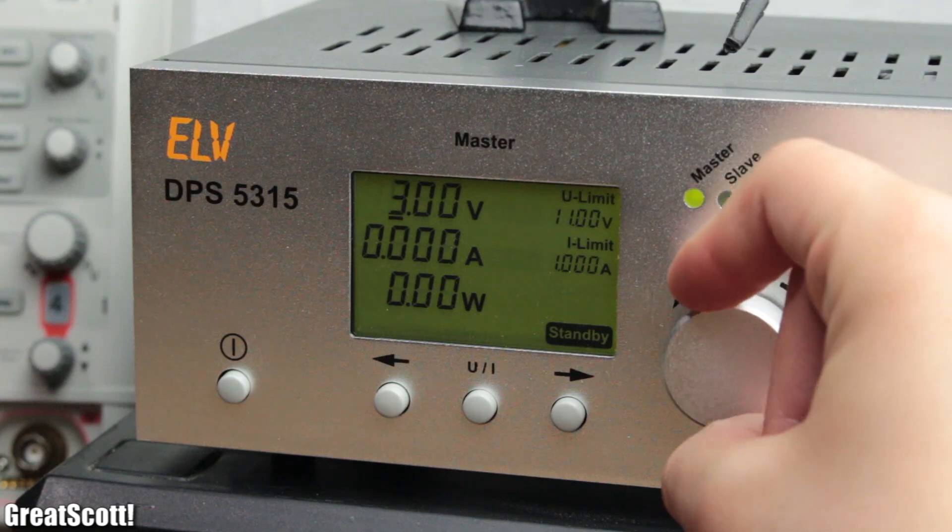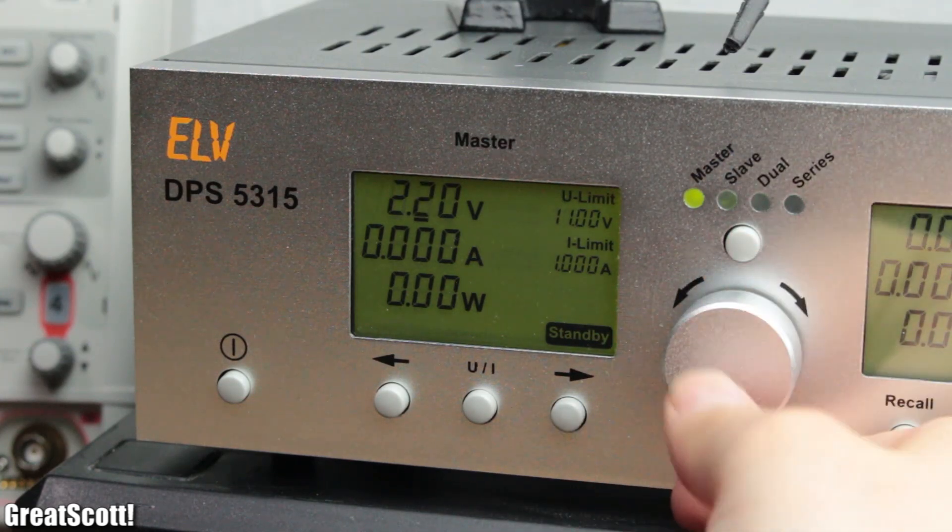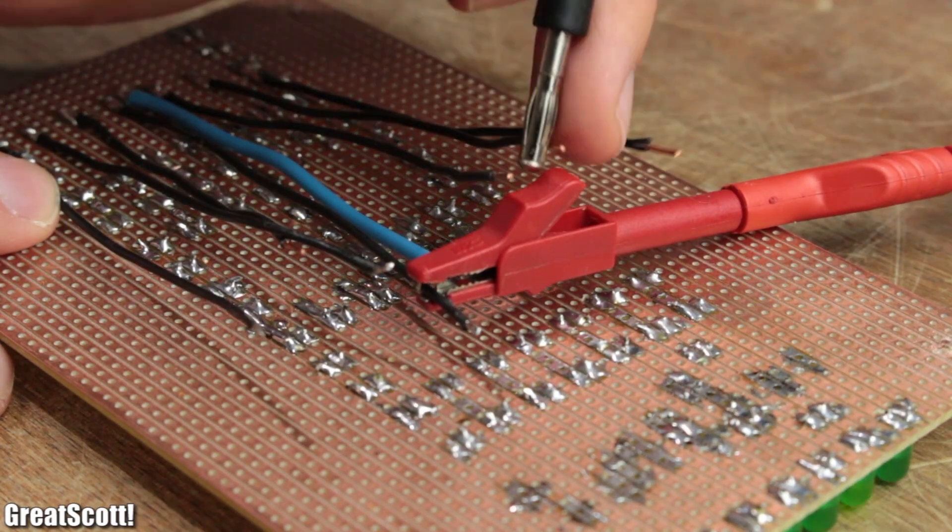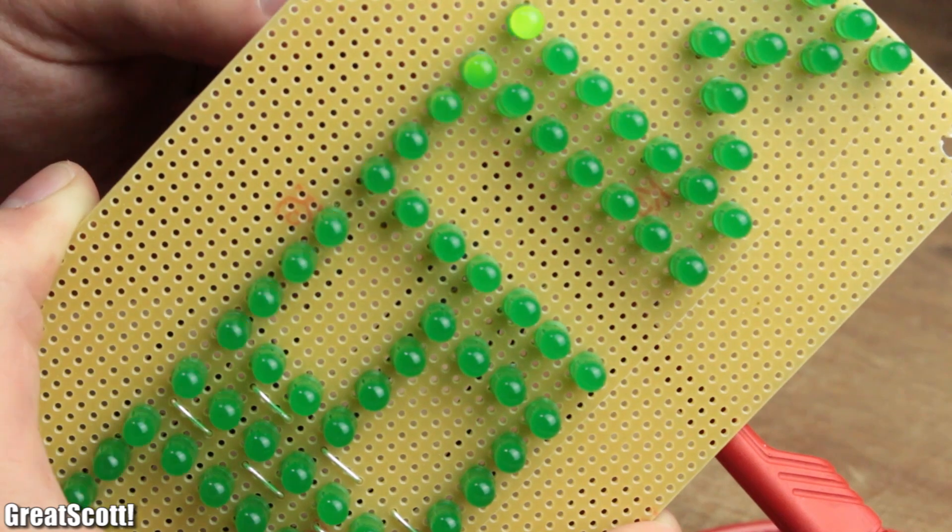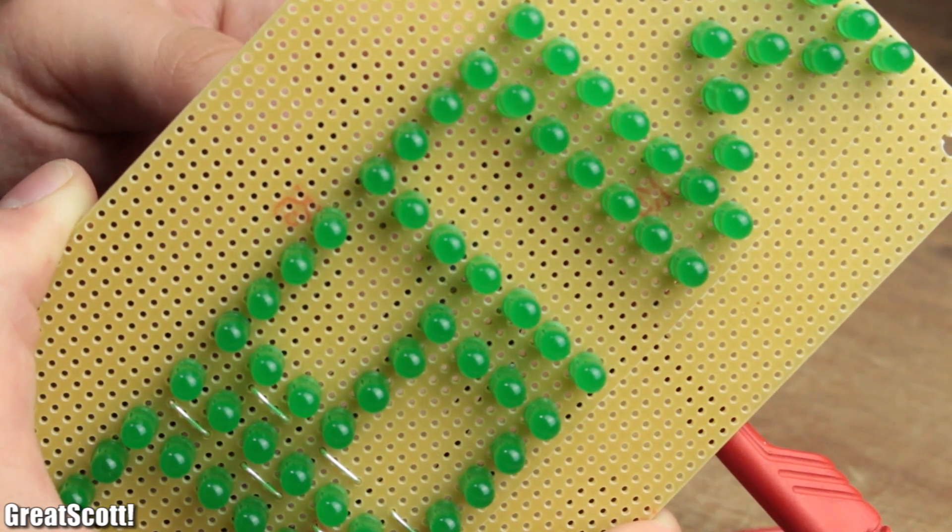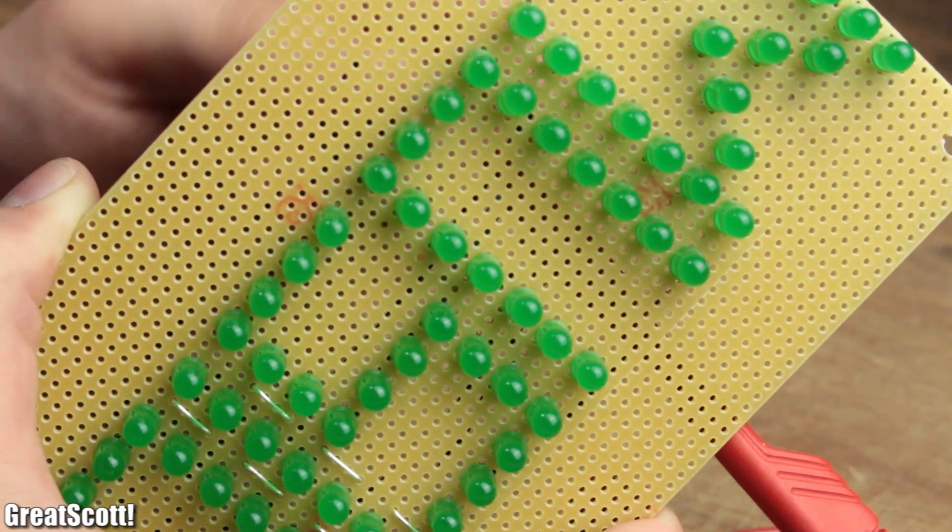I tested it out by applying the forward voltage of this LED type to the common anode and each cathode line, and it all seems to work without a problem, so we can move on to the control electronics.